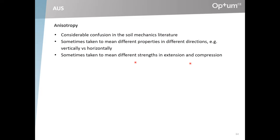One idea — not an original one — is to consider the possibility that these materials may sometimes be anisotropic. The problem with introducing anisotropy, at least in the context of undrained shear strength, is that there is a huge amount of confusion in the soil mechanics literature as to what anisotropy really is. Sometimes it's taken to denote different properties in different directions — say different strengths vertically compared to horizontally — that's what I would call anisotropy. But sometimes it's also taken to mean simply different strengths in extension and compression, which I hope I've shown has nothing really to do with anisotropy. That is a completely expected feature of a perfectly isotropic material.